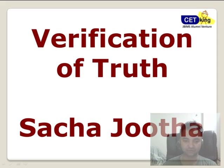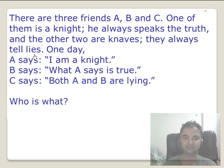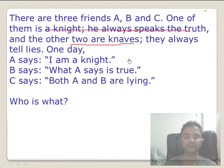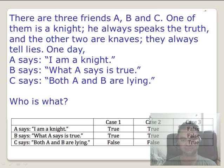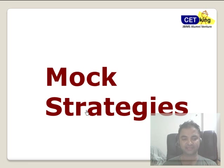Last part: there may be one question on FIJ or verification of truth — also called Sach/Jhuta or truth-liar. There are three friends A, B, C; one of them is a knight who always speaks the truth, and the other two are knaves who always lie. Three statements are given and you have to answer accordingly. Please pause and try it yourself. You make a table out of that. If you solve this, C is the truth-teller and A and B are liars — that's the answer.